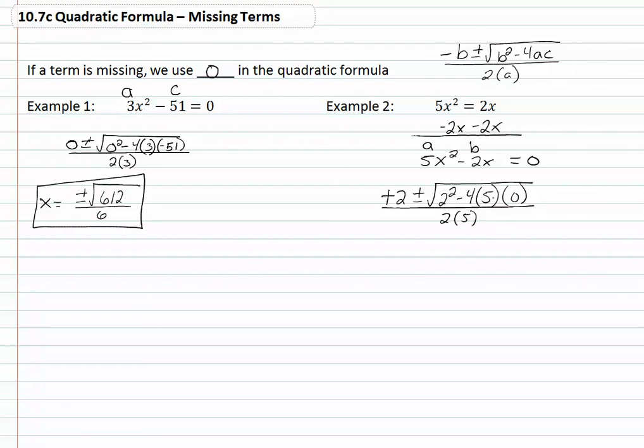Now when we multiply this out and simplify the inside, we're going to get two plus or minus the square root of four, all over ten.